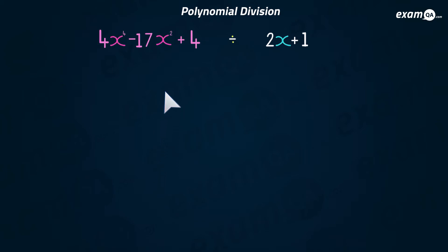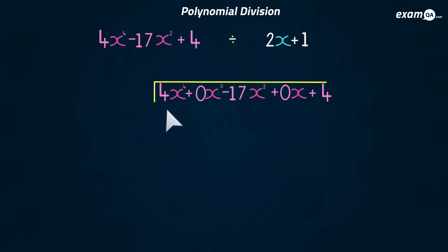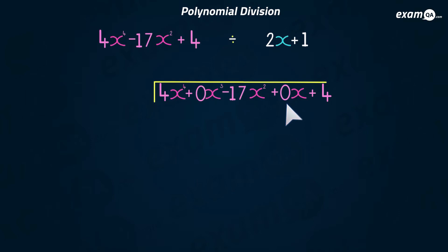Let's do another question. We set up the division: the expression we're dividing goes inside the bracket. Now, what you put inside is very important — if there's a term missing, you still put it in. For example, we don't have any x term in the expression, so I put zero x. Underneath the bus stop, it's very important that there are no missing terms. If you haven't got an x term, write it as zero x, otherwise you might have problems. The two x plus one, which we're dividing by, goes outside.